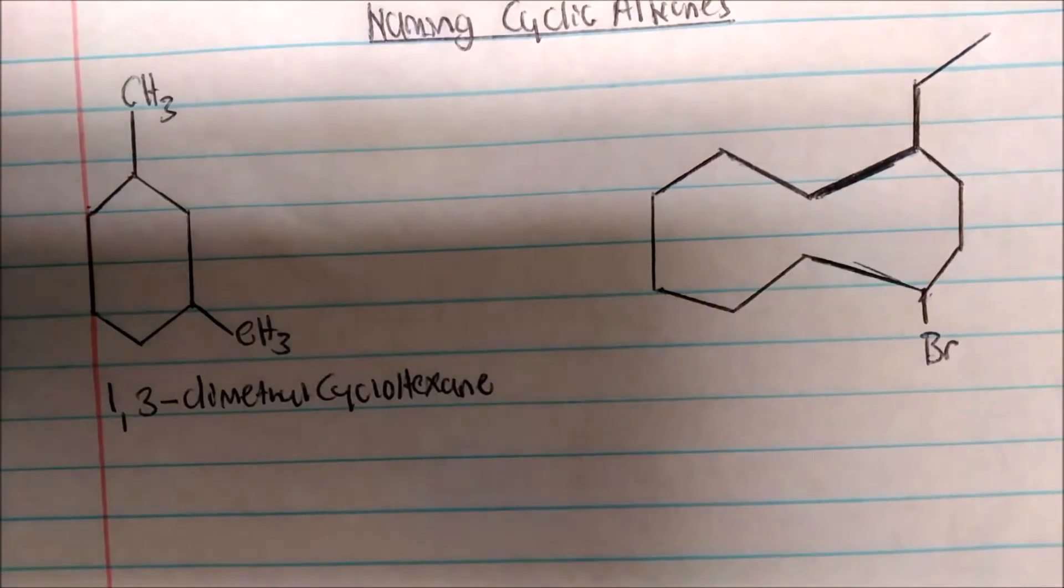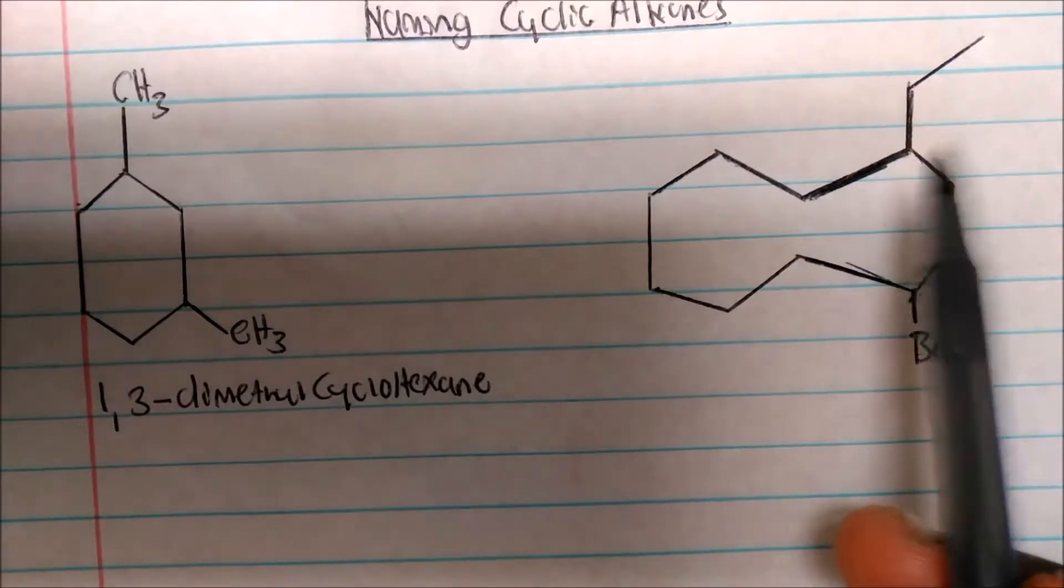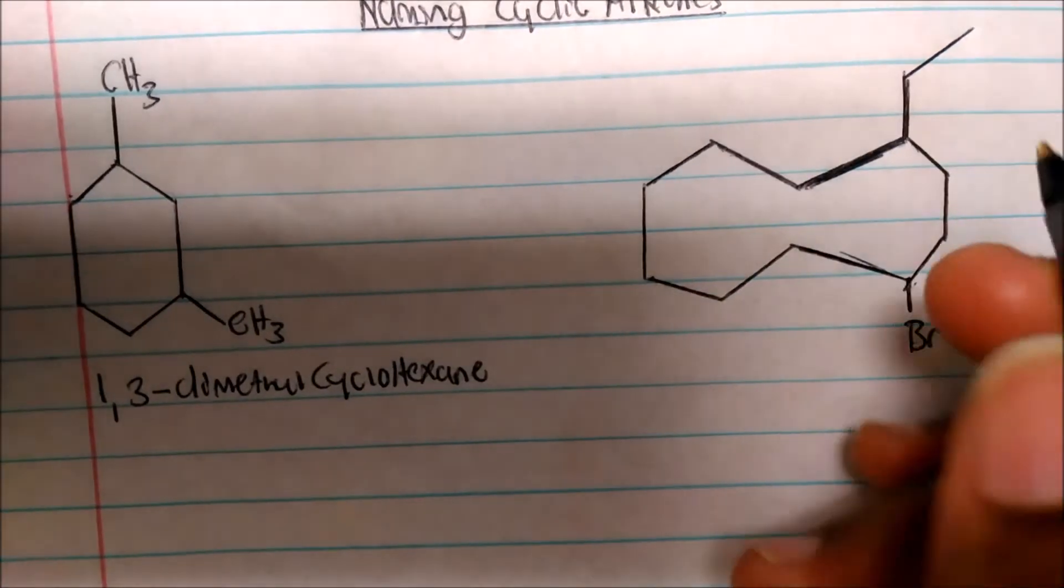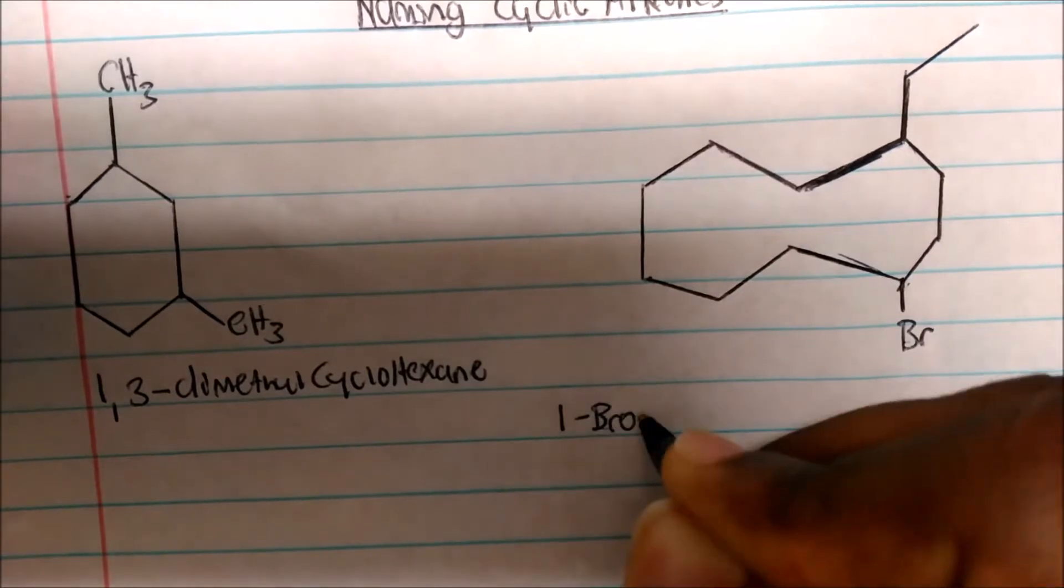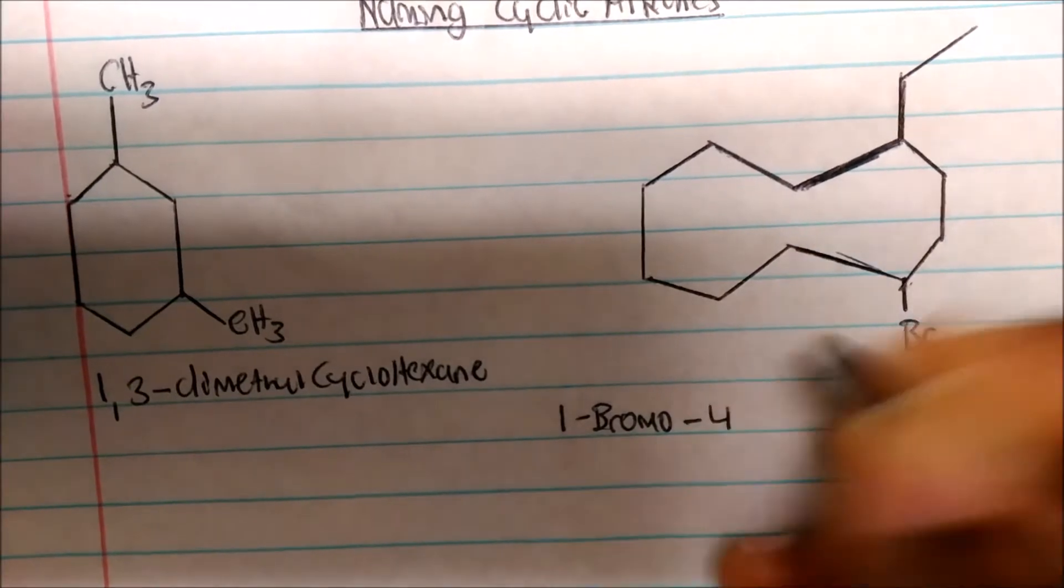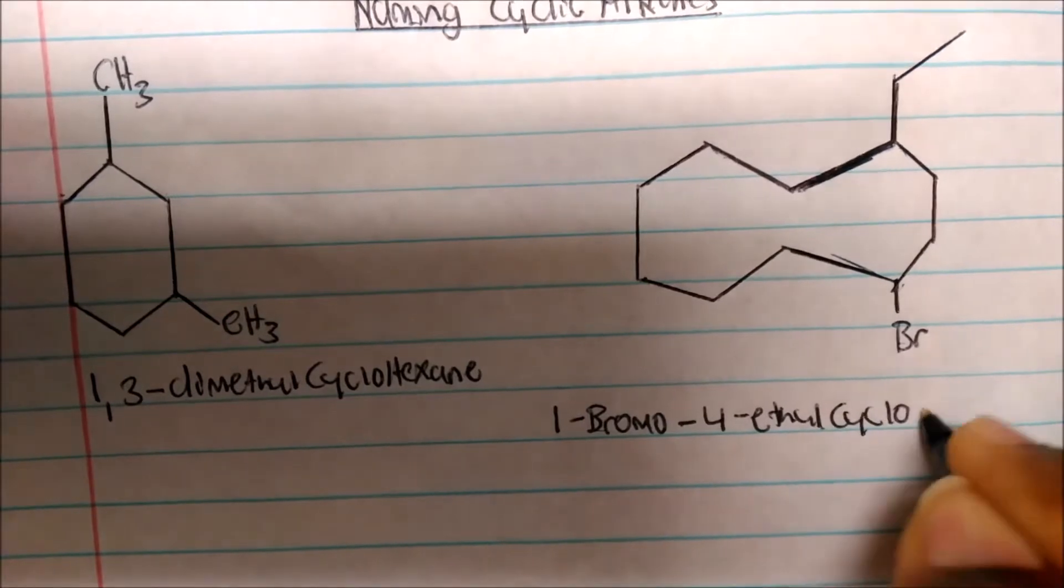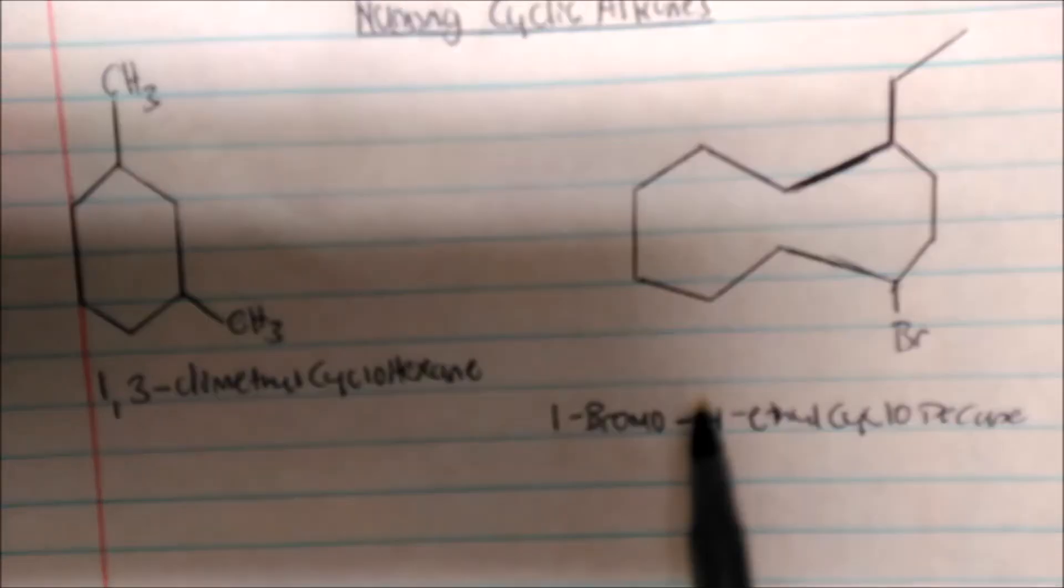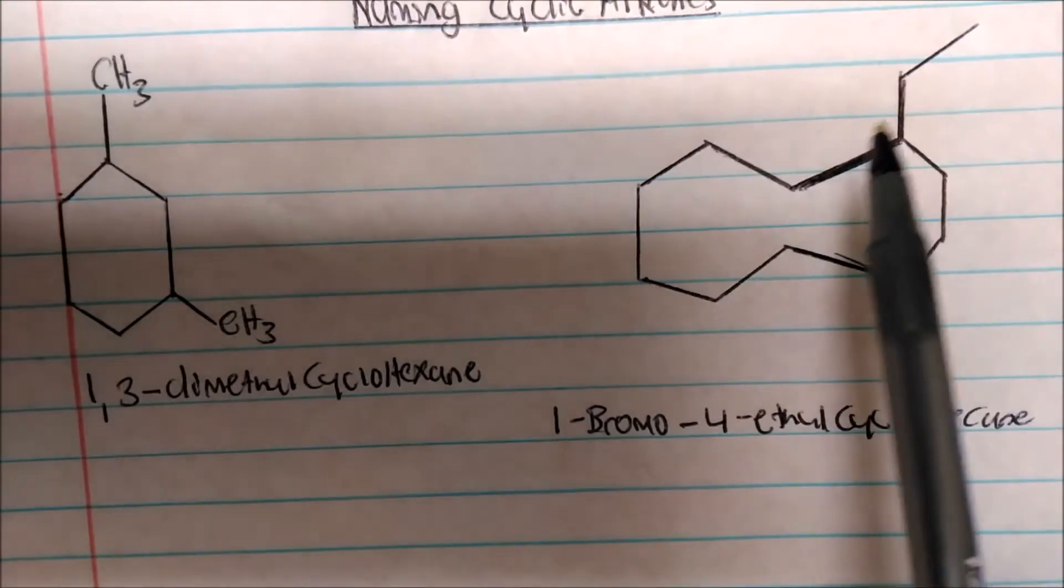Now we have some substituents here. So we have a bromine here, and we have an ethyl here. So again, we always label in alphabetical order. So squashing everything together, this will be one-bromo, carbon two, three, four, dash four, dash ethylcyclohexane. Again, one-bromo-four-ethylcyclohexane.